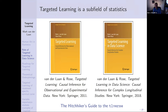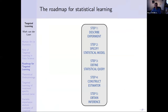Targeted learning — the field of constructing plug-in estimators for estimands utilizing machine learning in realistic statistical models where we only make realistic assumptions — began with an important paper in 2006 on the targeted maximum likelihood estimator. Since then, a lot of developments have been based on the TMLE principle. Two books have been published, one in 2011 and one in 2018. We're also doing a lot of software development, the so-called TL-verse, with lots of very general tools for targeted learning.